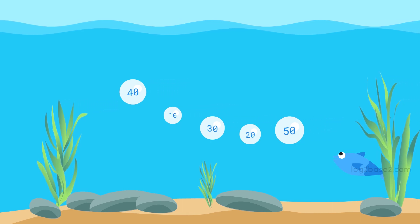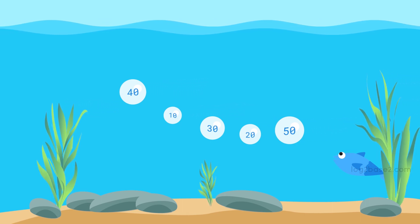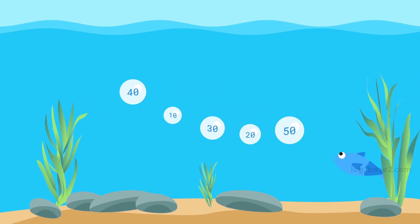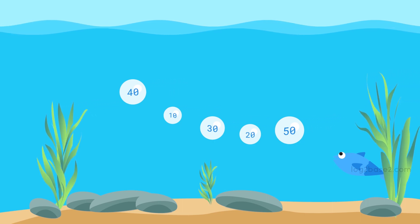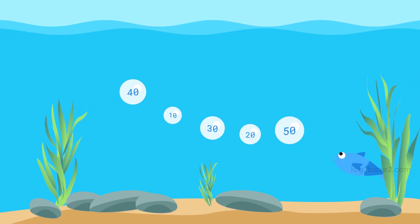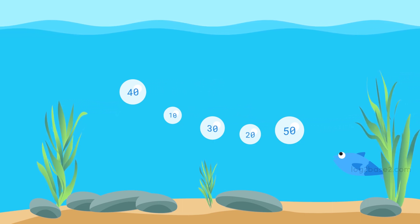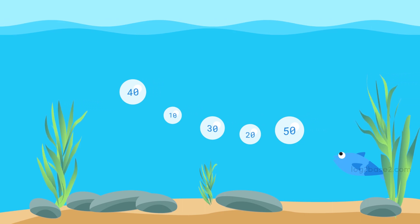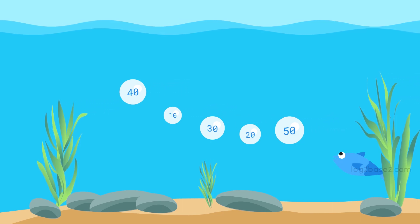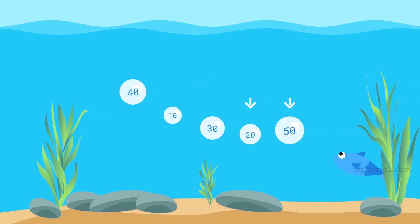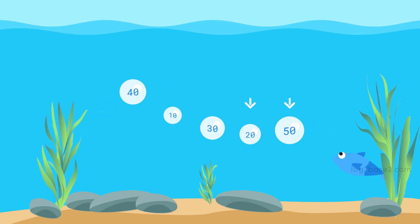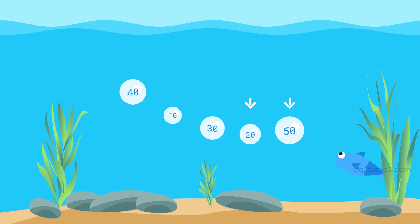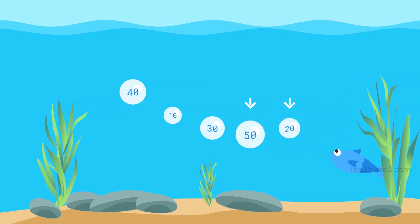What bubble sort actually does is it will continuously compare adjacent bubbles. And if the first bubble is larger than the second, it is swapped. See here we have the first bubble larger than the second bubble, so both are swapped.